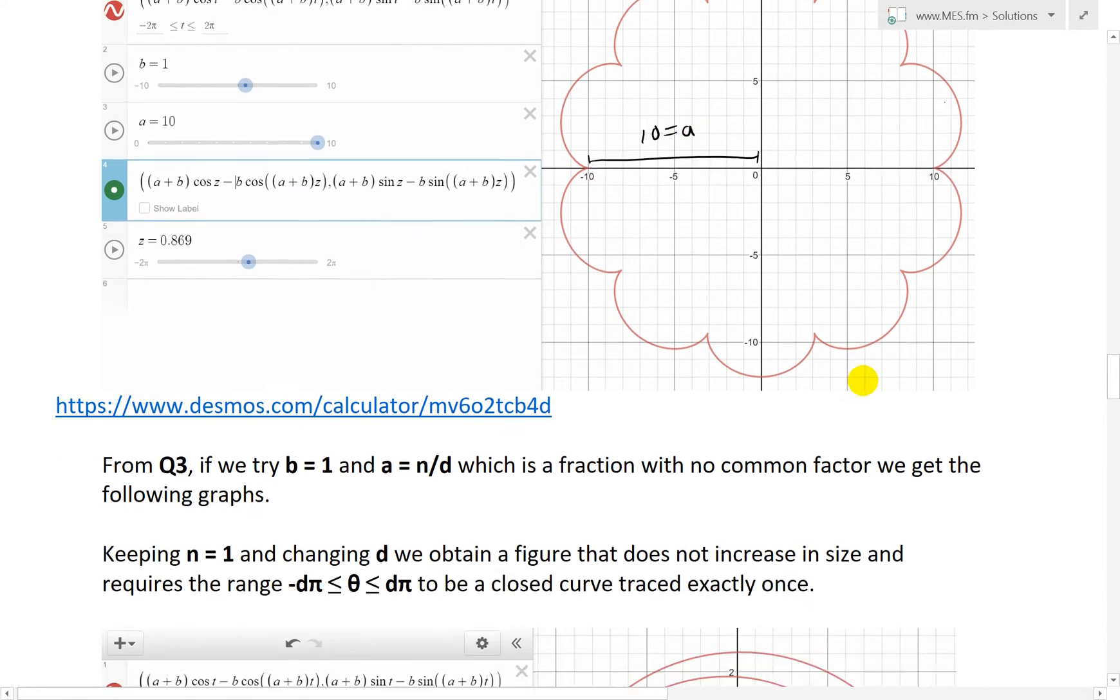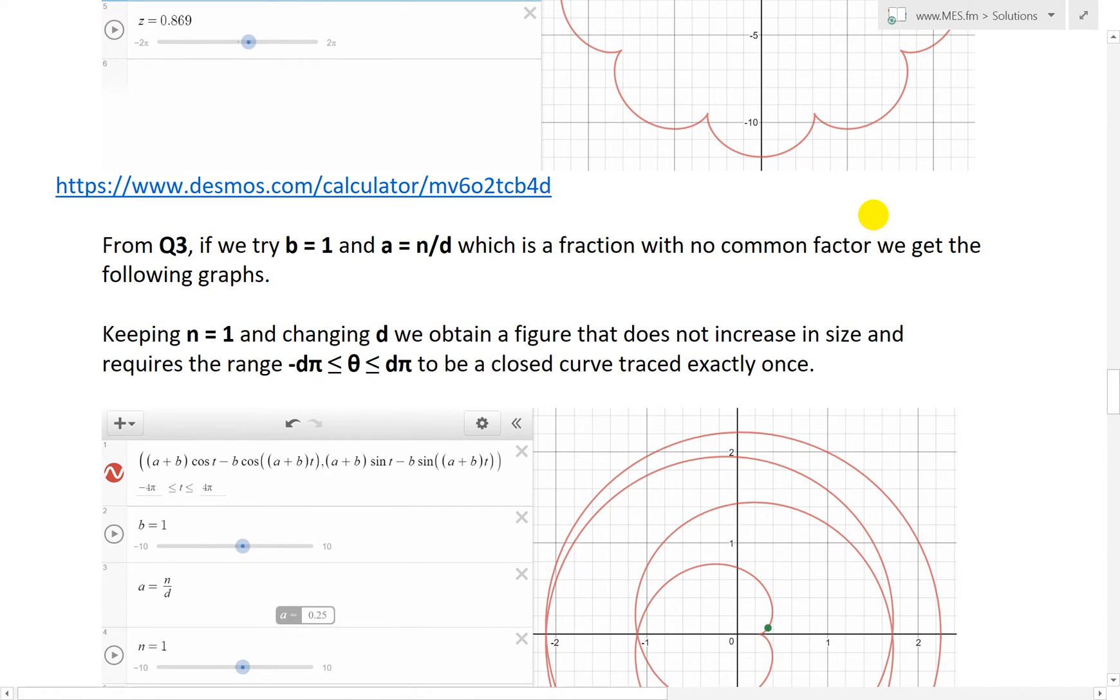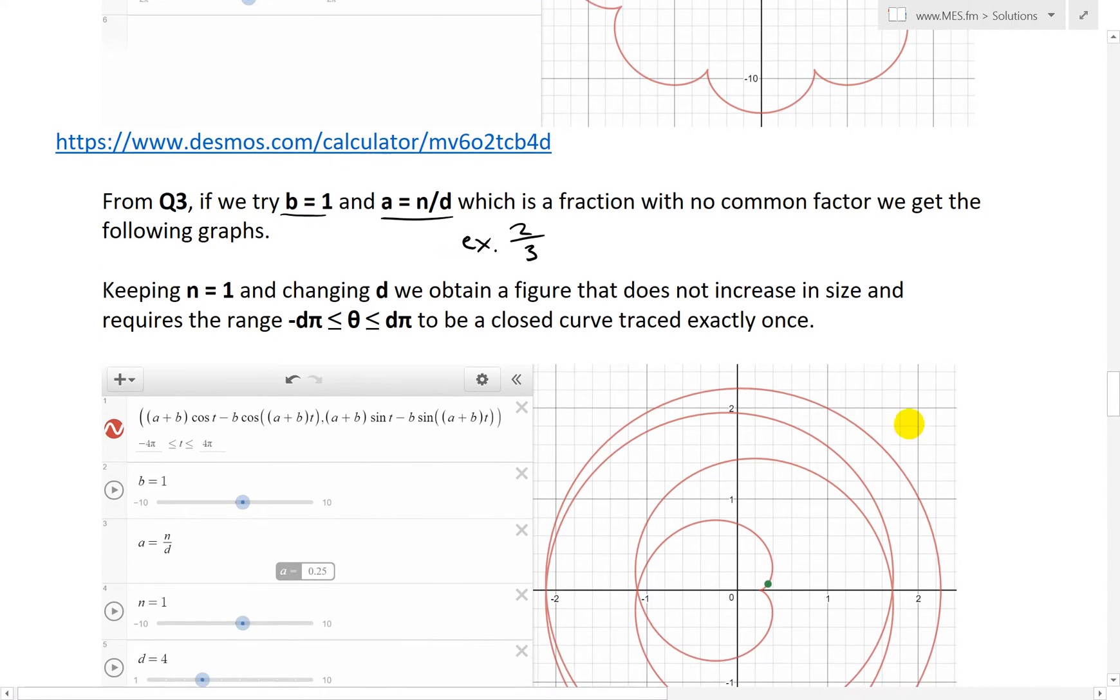And now from question 3 or part 3 of what we did for the hypocycloid was we tried again b equals to 1, it's the unit radius. But instead we chose a equals n over d, which is a fraction with no common factor. For example, 2 over, let's say, 3. These can't divide easily, so this is the lowest form. So what I've done with that, we get these following curves. And here's the updated calculator, so you click this one.